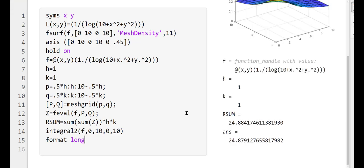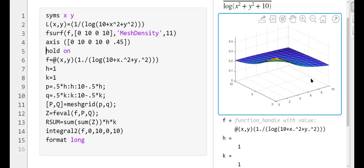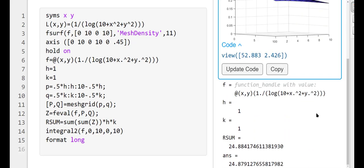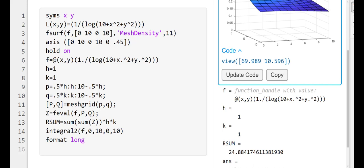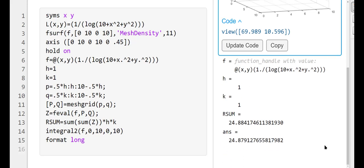If I press control-enter, I get the graph here, and on the bottom I have a value of this integral approximated by MATLAB. Above here is a Riemann sum that we obtained by taking intervals of length 1 in each direction. Up to two digits after the decimal sign, we're getting pretty good approximation.